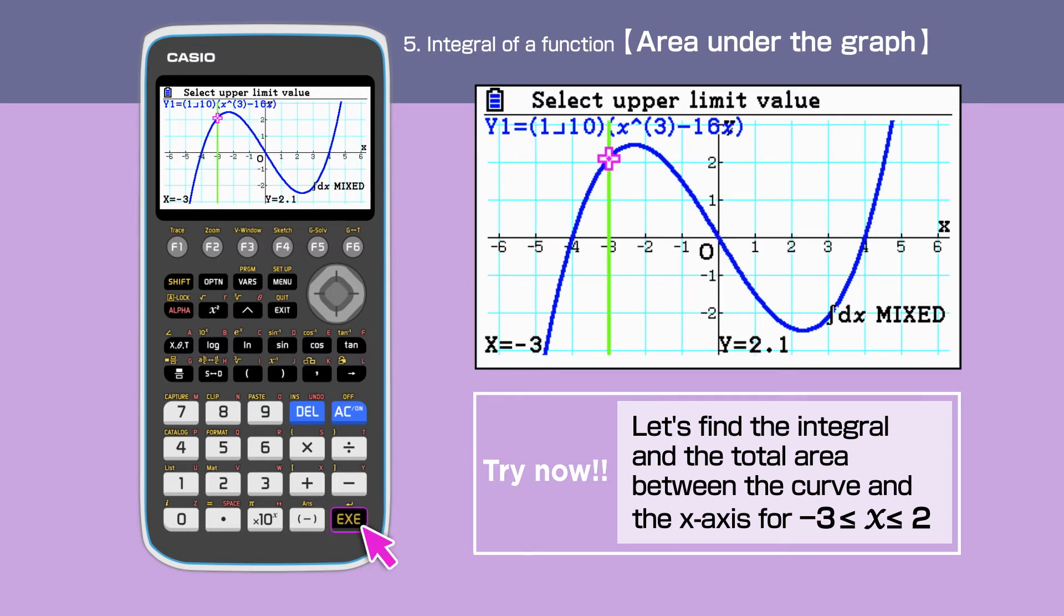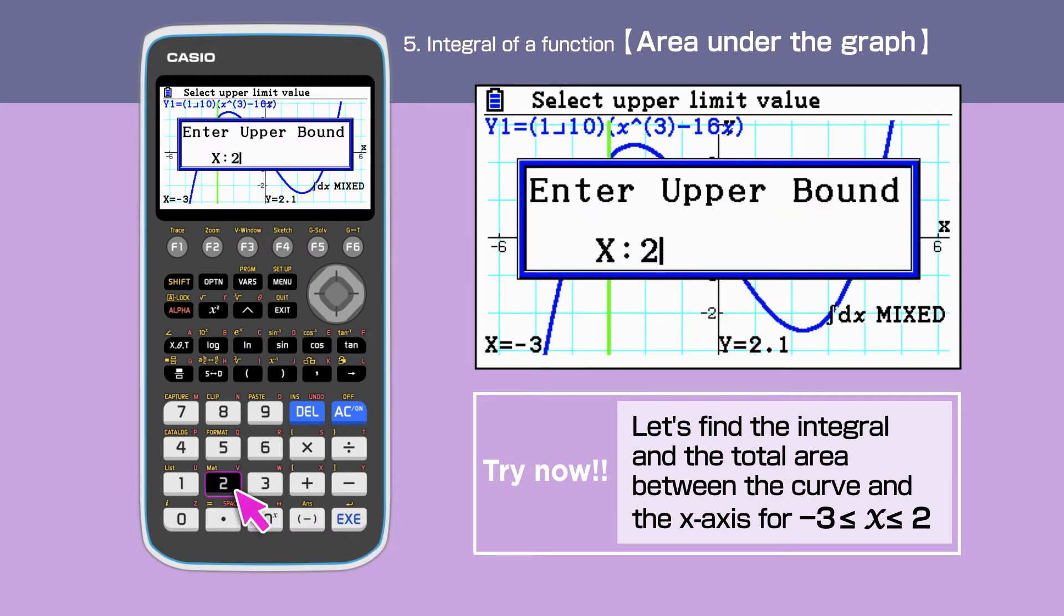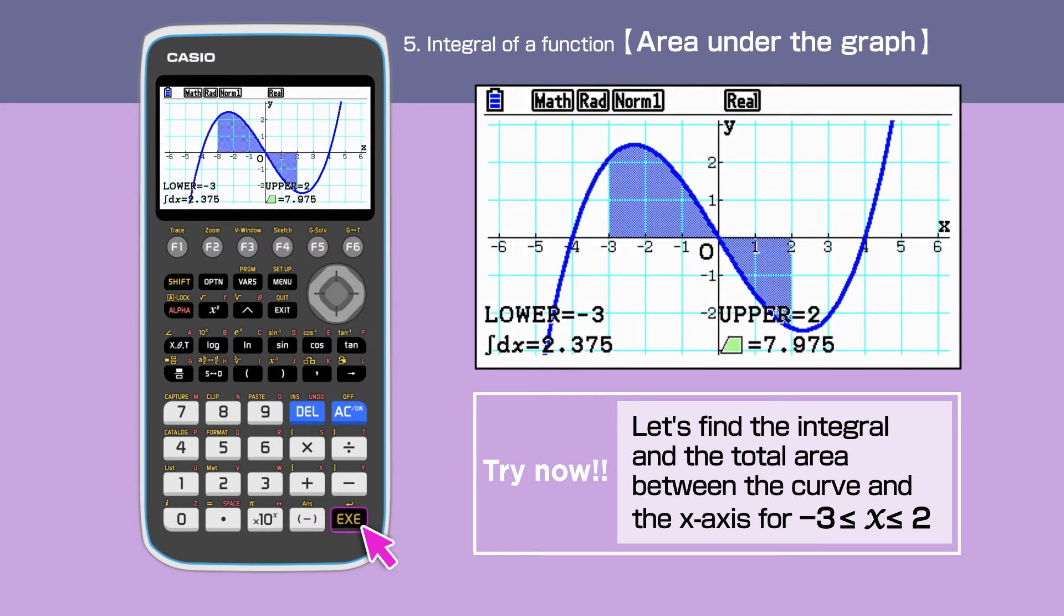Press Execute and after that, we put the upper bound, 2 for x. Press Execute again. The area enclosed is shaded and both the value of the integral as well as the total area are displayed.